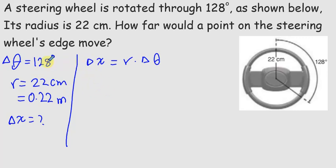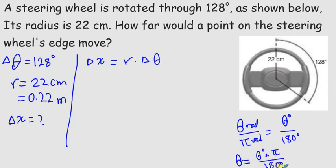But the problem is theta is in degrees. So here you know that is theta in radians divided by 1 pi radians equals theta in degrees divided by 180 degrees. In this case, theta in radians equals theta in degrees times pi divided by 180 degrees.